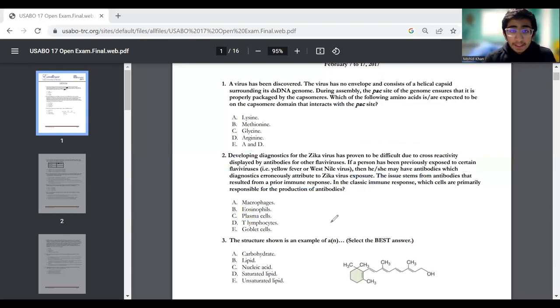Question number three. The structure shown is an example of, and then select the best answer. We have carbohydrate, lipid, nucleic acid, saturated lipid, or unsaturated lipid. First of all, I can tell straight off the bat, this is not going to be a nucleic acid because nucleic acids, for example DNA, they have phosphorus and this one does not.